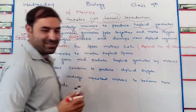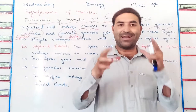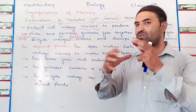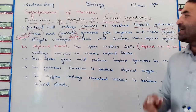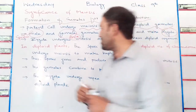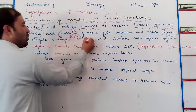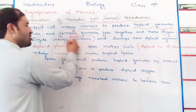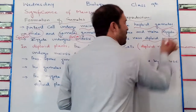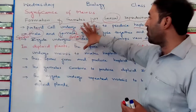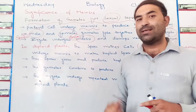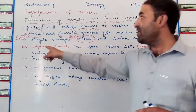These two gametes will fuse together to form a zygote — meaning sperm and ovum will fuse together to form a zygote. This zygote has a diploid number of chromosomes. The zygote then undergoes mitosis many times and develops into a new diploid organism. This is the whole process of formation of gametes for sexual reproduction in animals.